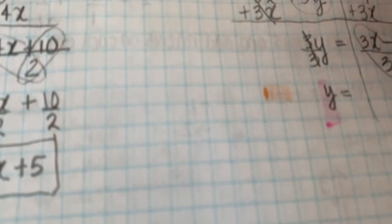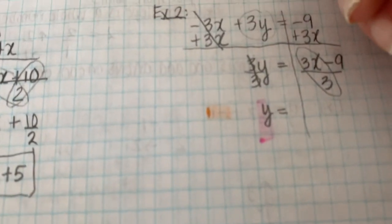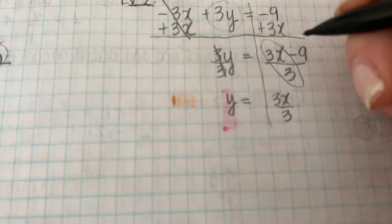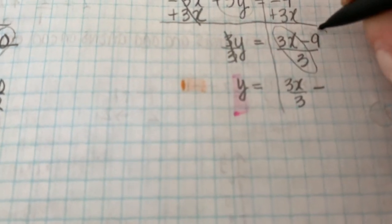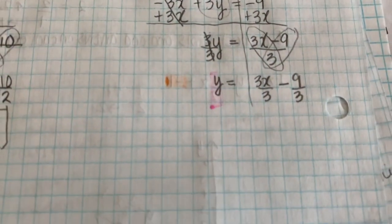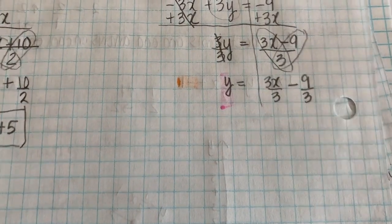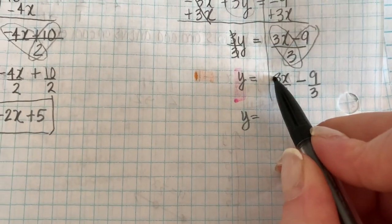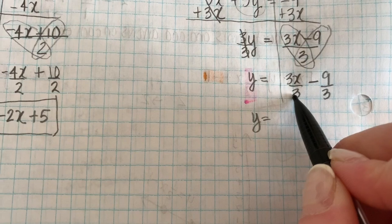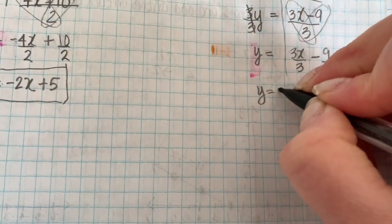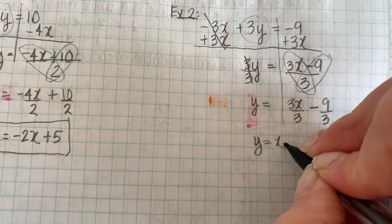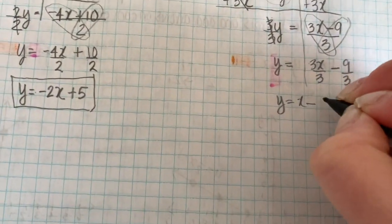So I'm going to do 3x divided by 3. Sorry. I'll write that out here. 3x divided by 3 minus 9 divided by 3. Okay? Sorry, it's a little unfocused. And then as our last step, we're just going to divide each one one at a time. 3 divided by 3 is 1. And 1x is the same as just x. You can write the 1 in front if you'd like. Minus 9 divided by 3 is 3.